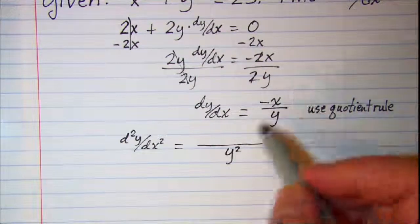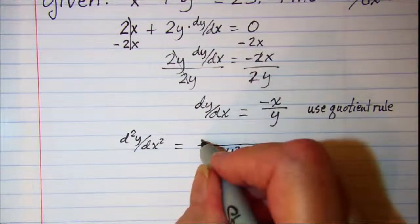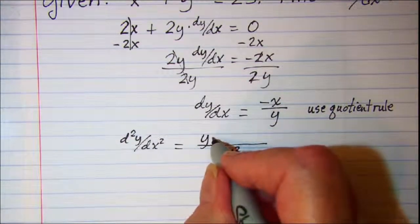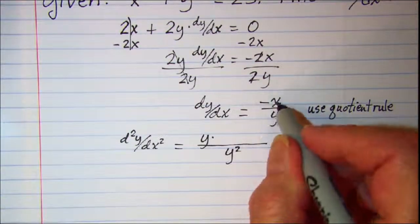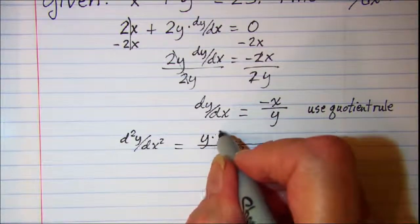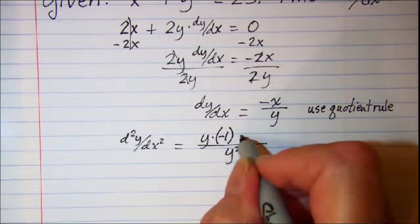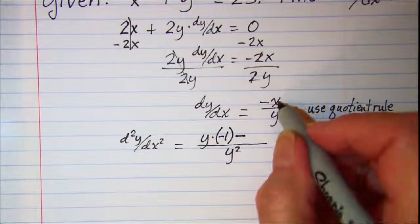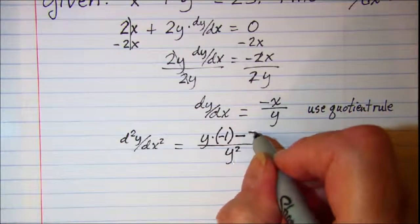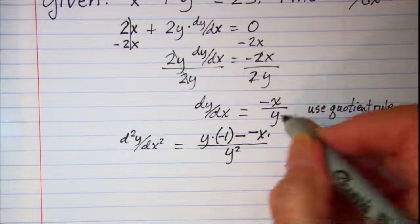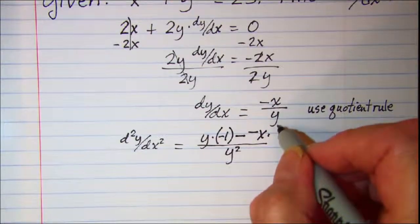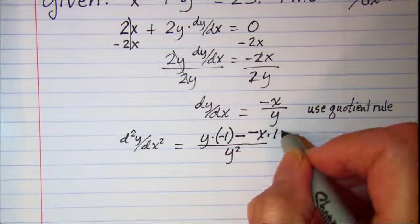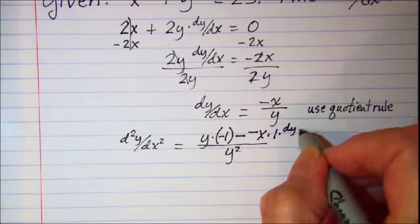And then we start up here with the denominator. So we have y times the derivative of the numerator which is just negative 1, subtract the numerator times the derivative of the bottom which is 1 but we have to multiply by dy/dx.